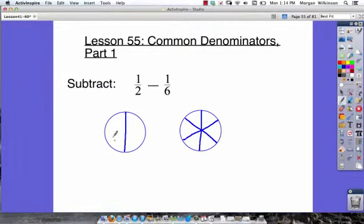I've drawn out some circles here broken into parts. So our first problem is 1 half. If we've got 1 half of a circle, we've got this area that's shaded in red. What we want to do is subtract 1 sixth from this 1 half. Now, if we look at that, well, these don't compare. They don't compare because they're different sizes.